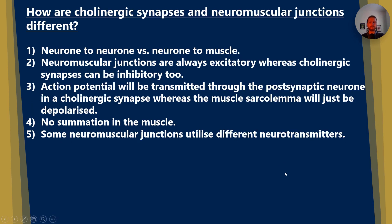This is a common exam question: how are cholinergic synapses and neuromuscular junctions different? This is spelt out in the specification, so you really need to know about it. Firstly, a cholinergic synapse is between two neurons, whereas a neuromuscular junction is always from a neuron to a muscle. A second point is that neuromuscular junctions are always excitatory, meaning they lead to depolarisation, whereas cholinergic synapses can be inhibitory too — for example, in the heart, where acetylcholine synapses are inhibitory.